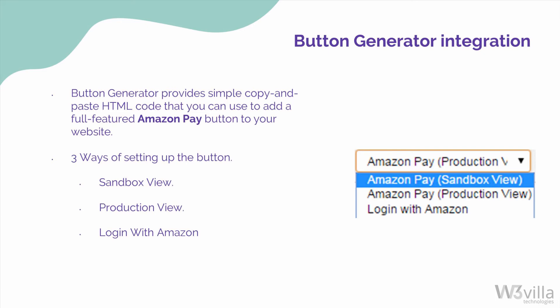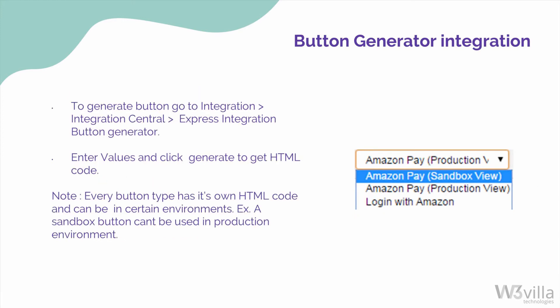To set up these buttons, go to Seller Central and select the type of button from the drop-down menu. Then go to the Express Integration Button Generator by clicking Integration and then Integration Central. The Button Generator is located in the Express Integration Button Generator section. Click Create, enter the applicable values, and then generate the HTML. Each button type will have its own HTML code. This is how you can set up Amazon Pay for your e-commerce store.